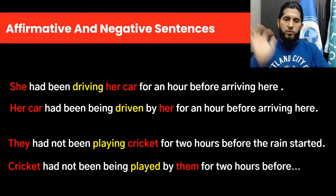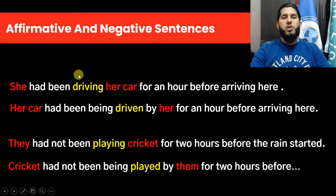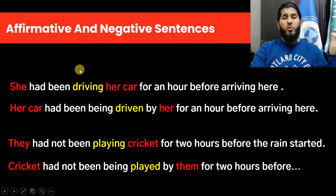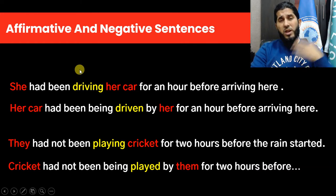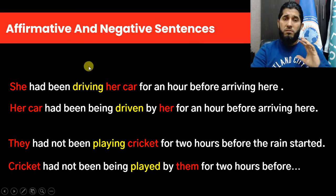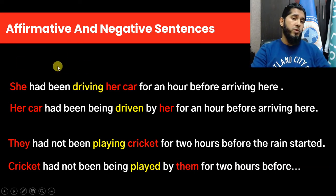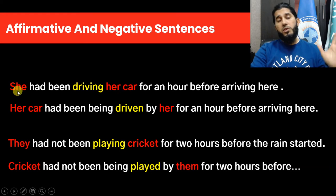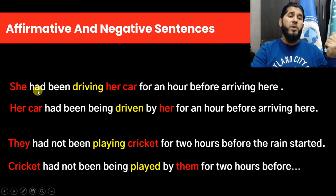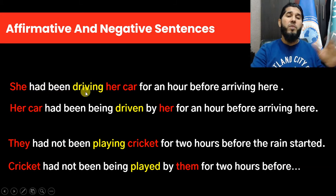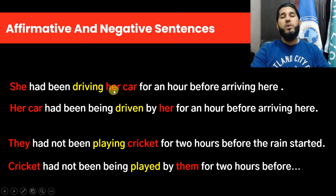Let's start. When we use past perfect continuous or progressive tense, we talk about the duration of an ongoing action before something else in the past. With all subjects, we use the helping verb 'had' and then 'been' — these two helping verbs — and the main verb comes in -ing form, then object and the rest of the sentence.